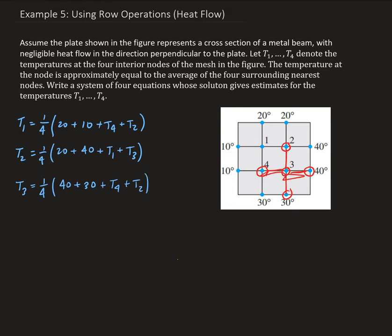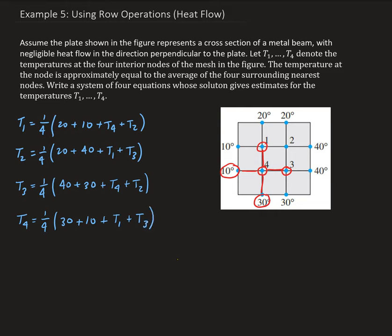For the last node, node 4, the surrounding points are node 1, node 3, and two boundary conditions. So the temperature at node 4 is T4 = one-fourth of (30 + 10 + T1 + T3).